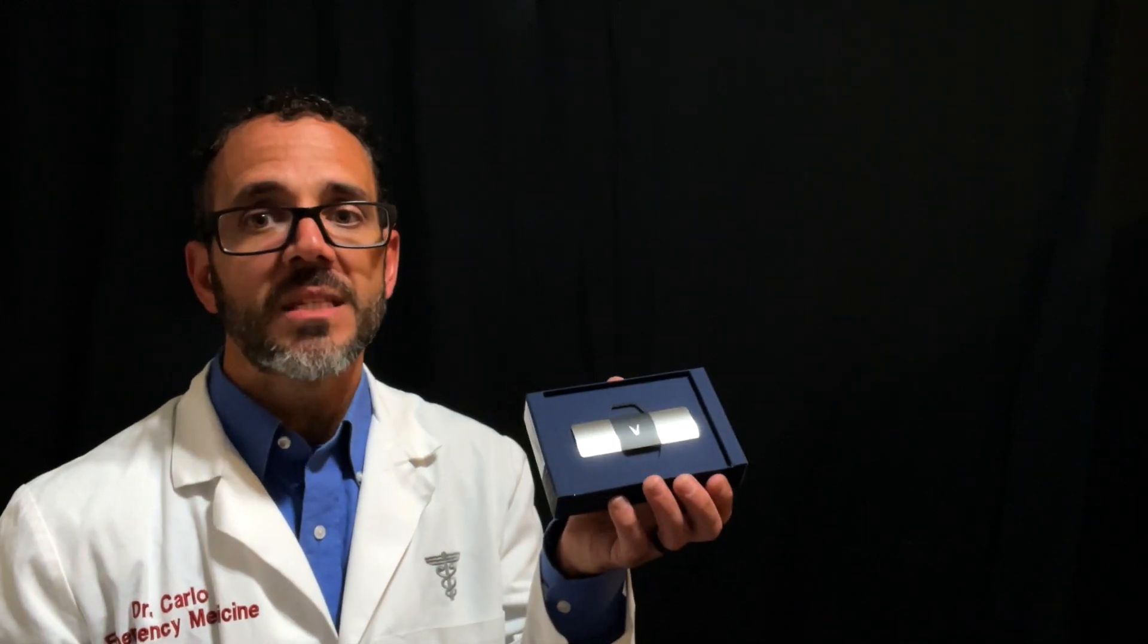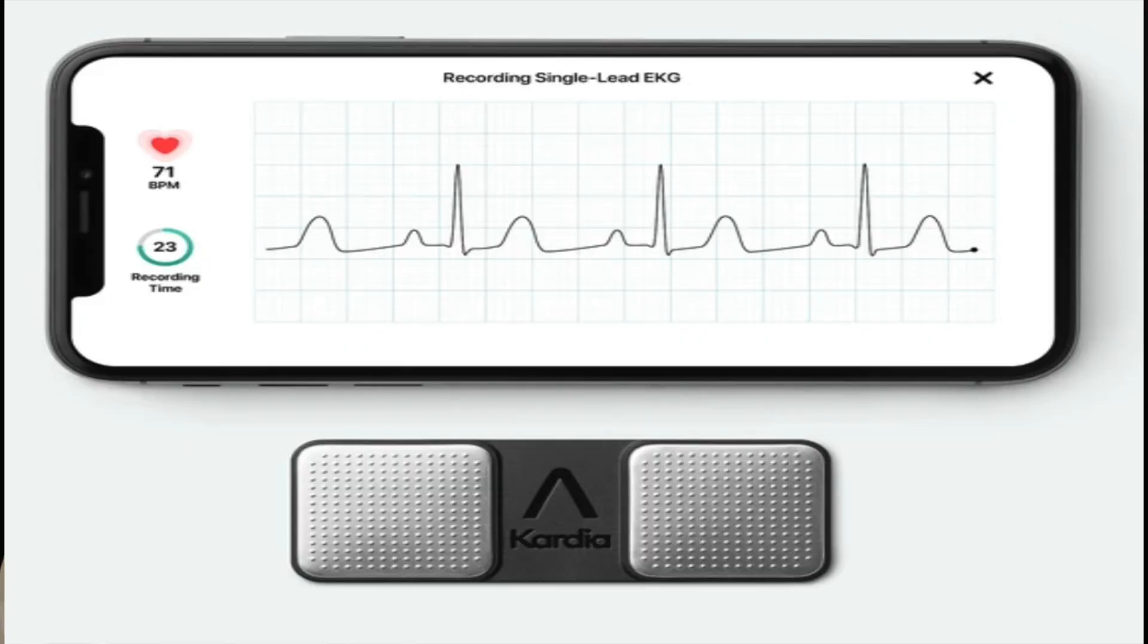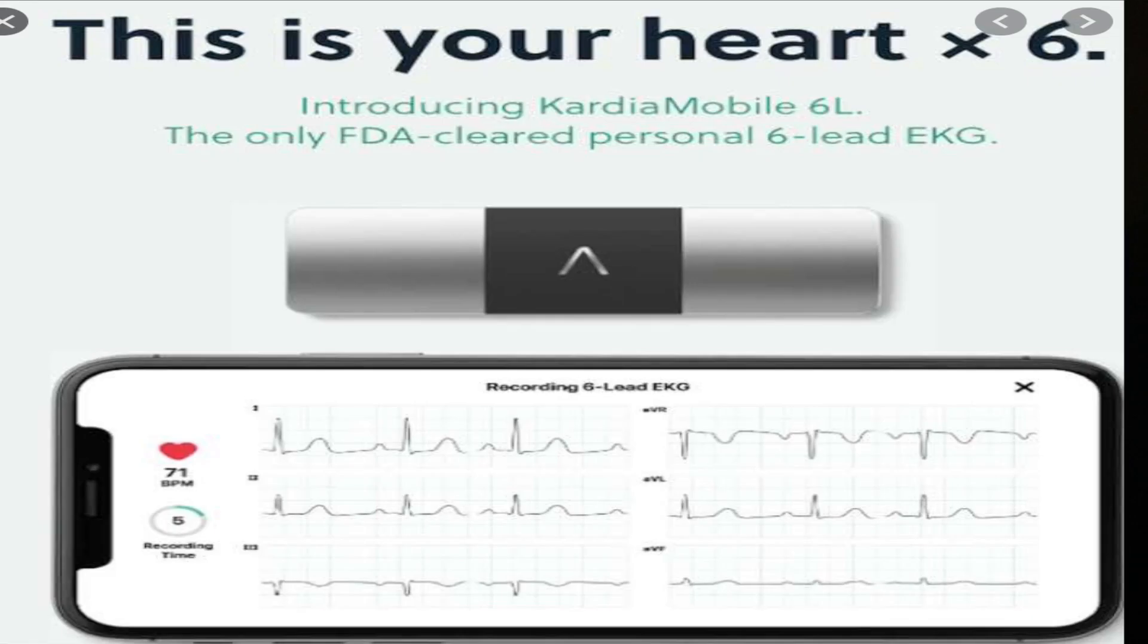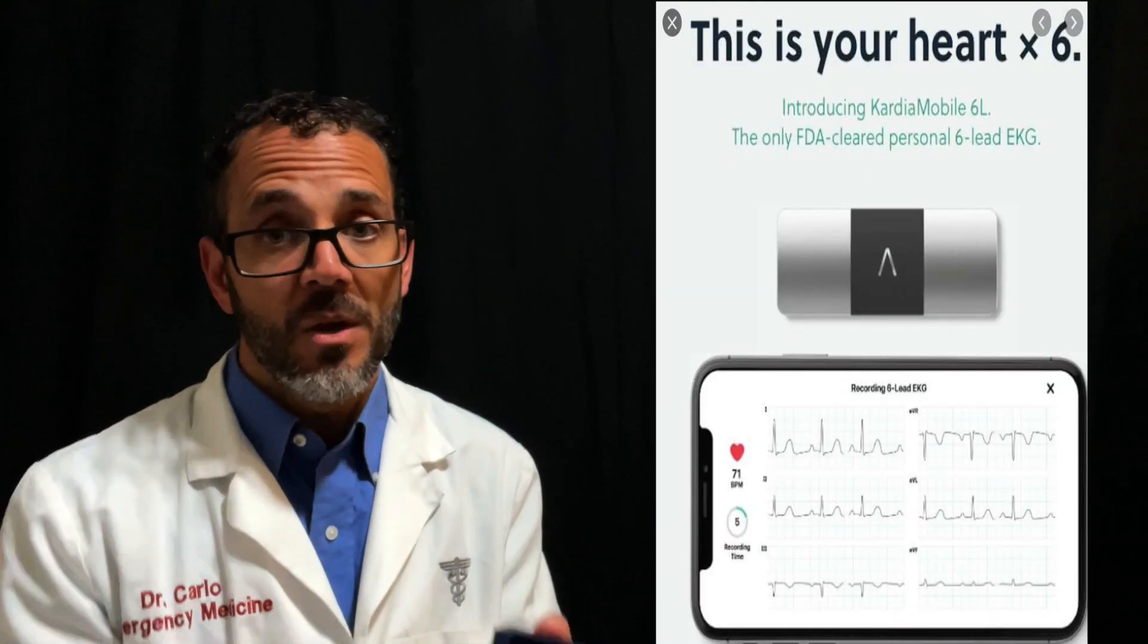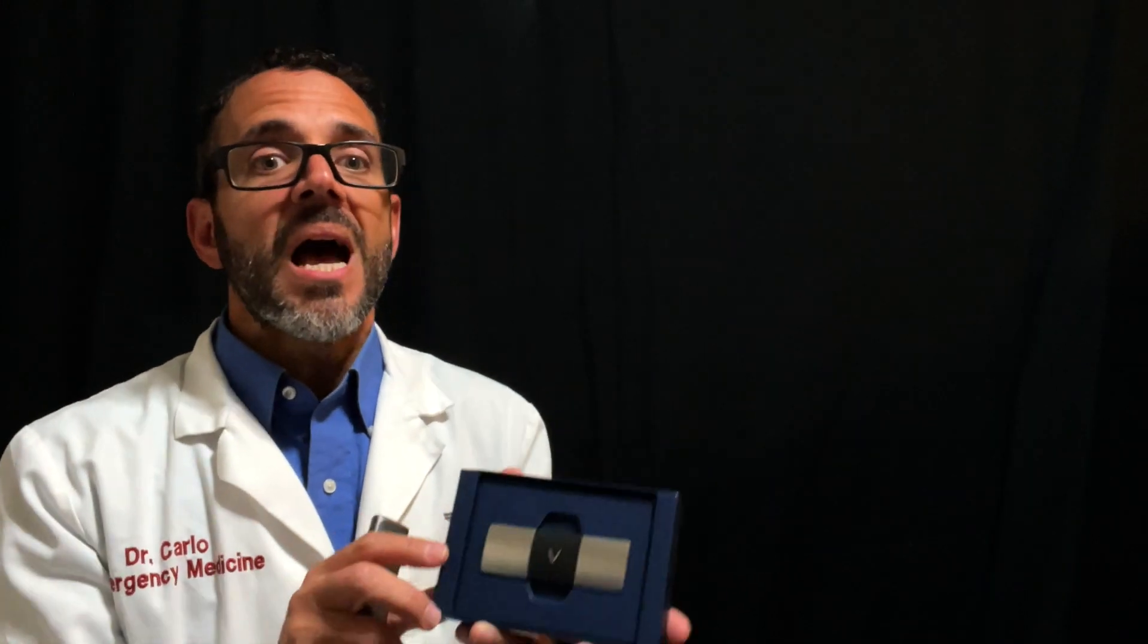There are two versions of this device, the Kardia device. There's a single-lead and a six-lead. This one is the six-lead Kardia device. The single-lead version produces a medical-grade tracing of the electrical conduction of your heart. And the six-lead version produces six different ways to look at the electricity conduction of your heart. For comparison purposes, a hospital EKG produces 12 views, 12 leads of the electrical conduction of your heart.